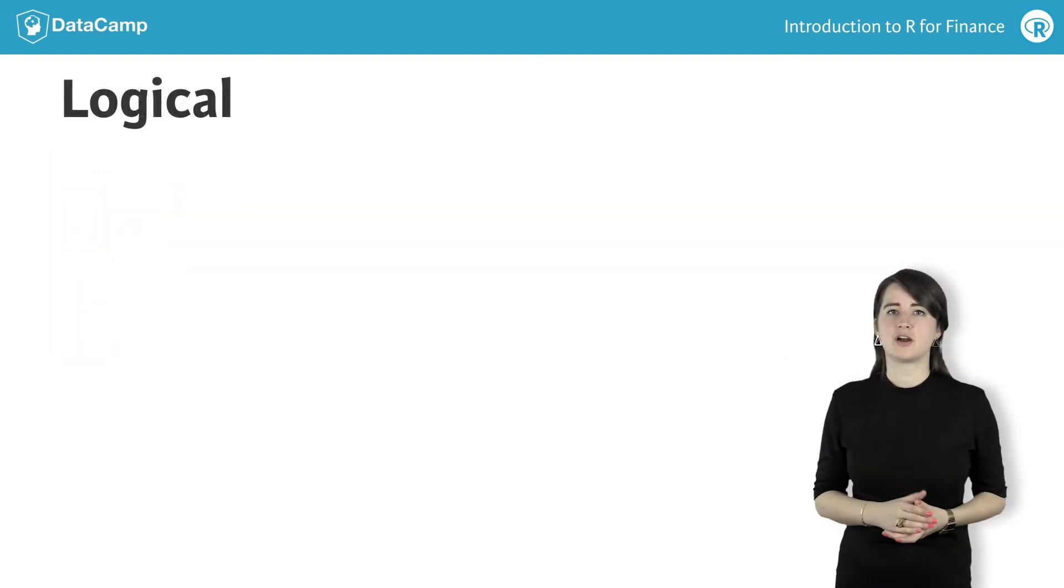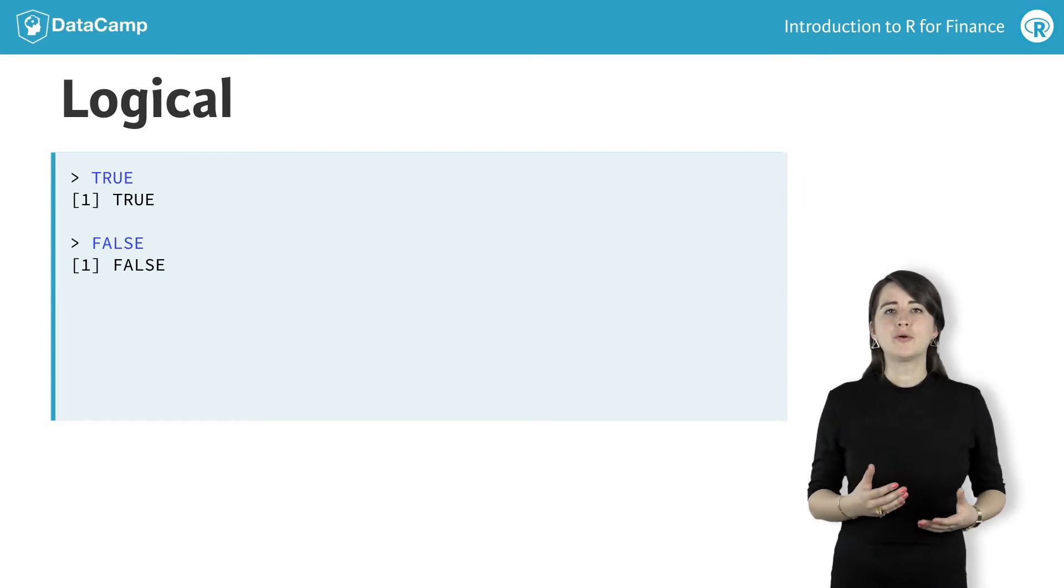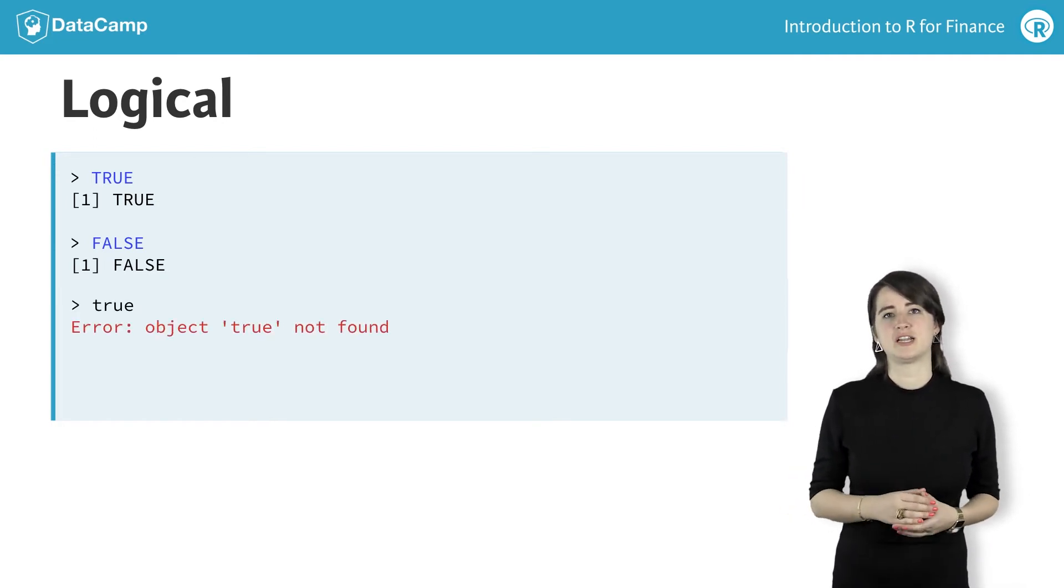And finally, logicals are boolean values of TRUE and FALSE. R requires that TRUE and FALSE are capitalized, so this would cause an error. Technically, NA to denote a missing value is also a logical, but we won't go too deep into that here.